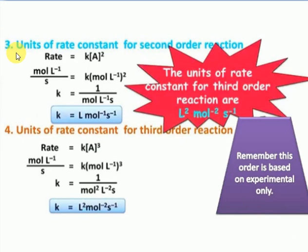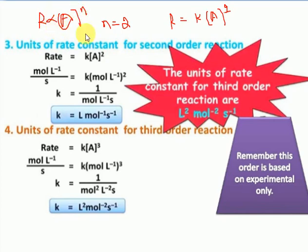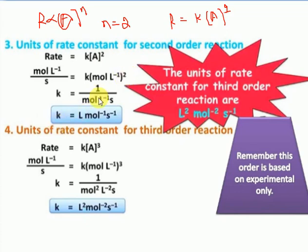Now, the rate constant for the second-order reaction. The rate of reaction is directly proportional to A to the power of 2. So N equals 2, giving rate equals K times A squared. To find units for K: K equals rate divided by A squared. A squared is moles per litre squared. Working through the cancellation, you get units of moles inverse, litre, second inverse for the second-order reaction.